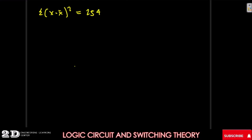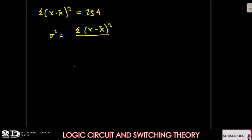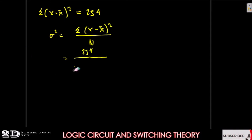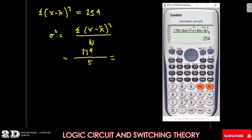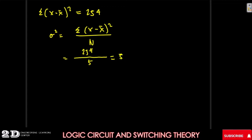To get our variance, we apply the formula: variance equals the summation of x minus x-bar squared over n. Our summation is 254 and our n is 5. Using the calculator, 254 divided by 5 equals 50.8. So our variance is 50.8.